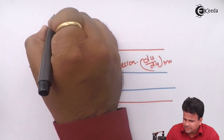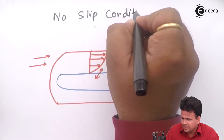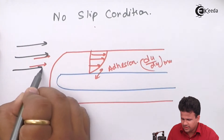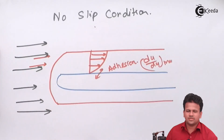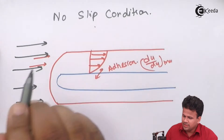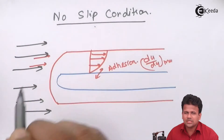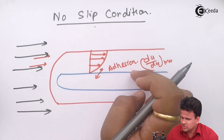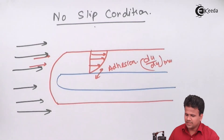We should always understand the no-slip condition. When the fluid is flowing at a very high velocity, there is a possibility that the fluid nearer to the surface of the solid might slip. The first assumption we consider in boundary layer theory is the no-slip condition, which means there is no slipping of the fluid on the solid surface, and the relative velocity between the solid and the boundary is zero.